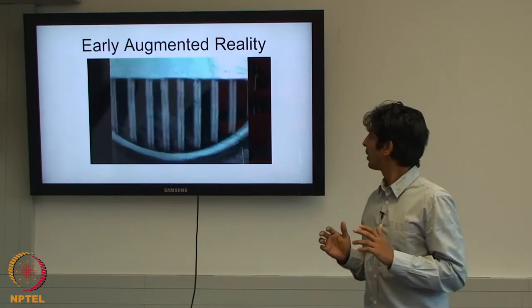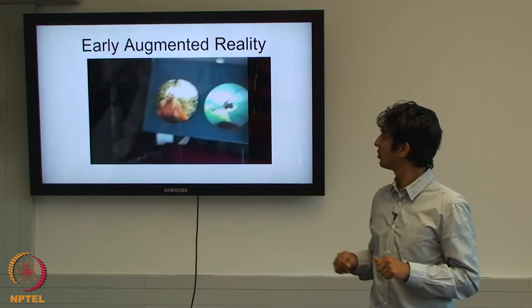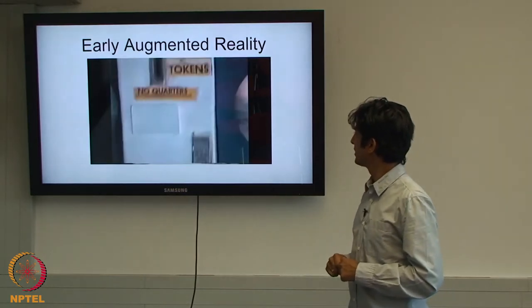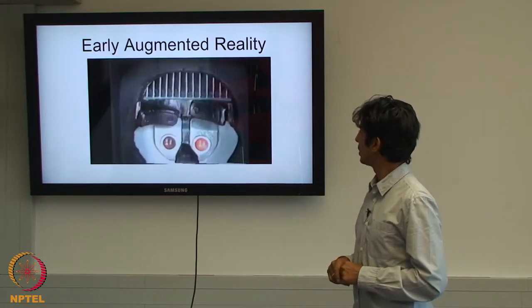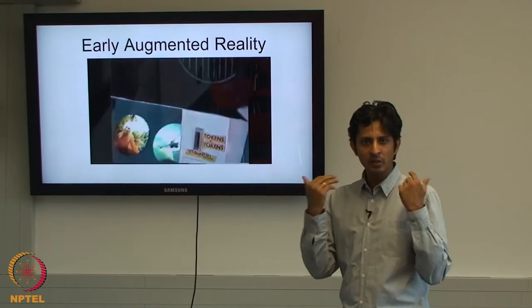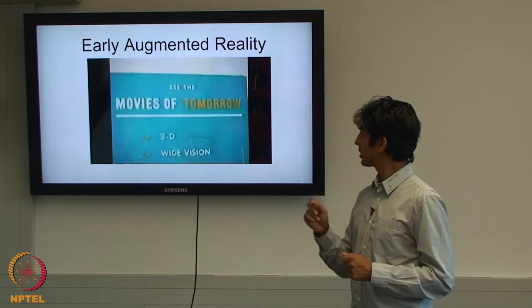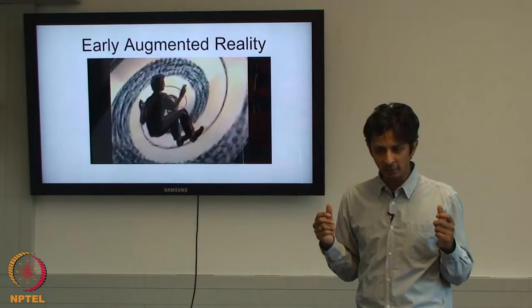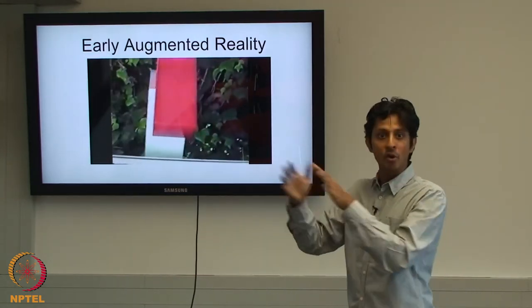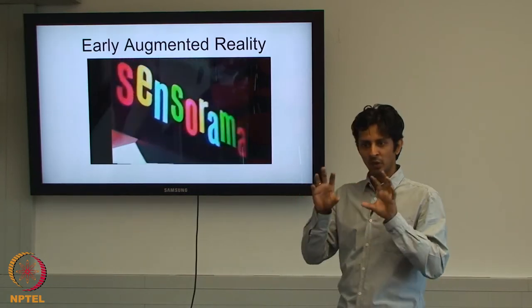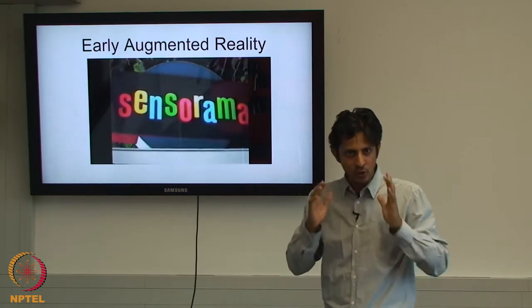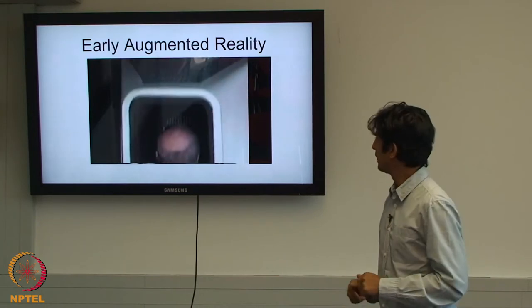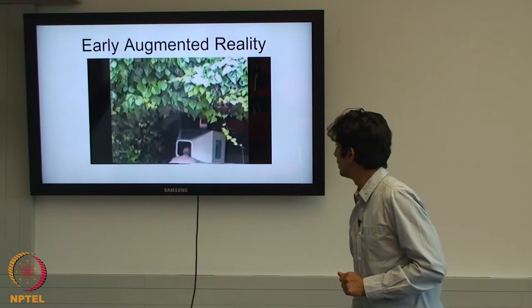The Sensorama had different movies — a car rally, helicopter ride — you put coins in like a video booth. A fan at the back blew air based on the movie content, and it even created smells. It featured full 3D with two views, wide vision, stereo sound, aroma, wind, and vibrations. You were transported into this virtual or remote realistic world because it was really two cameras recording a real environment somewhere else.